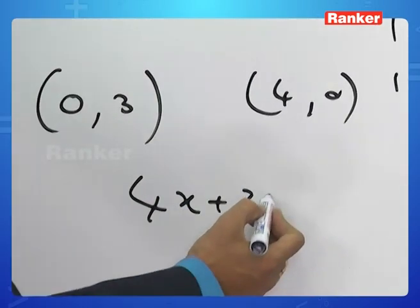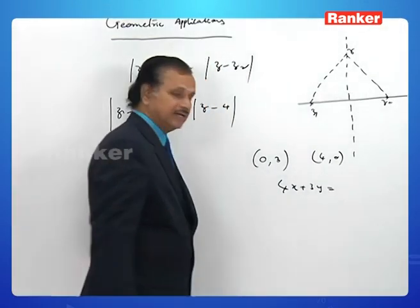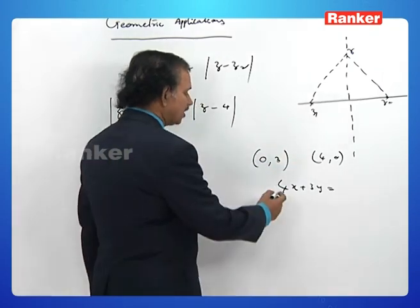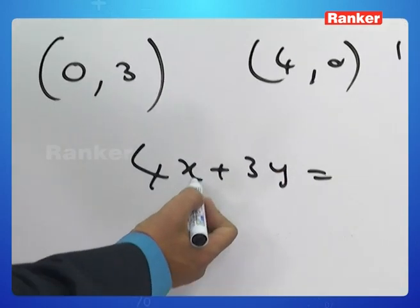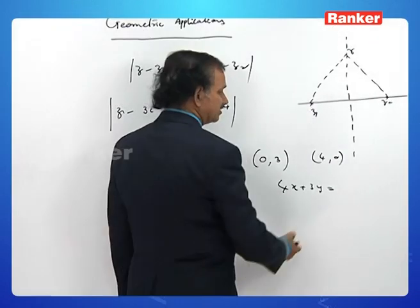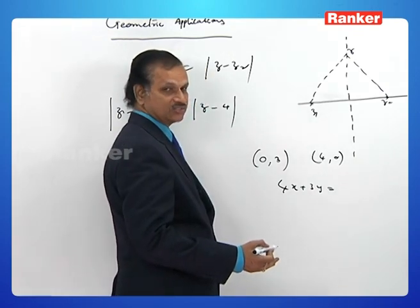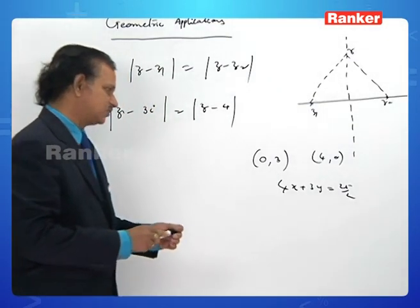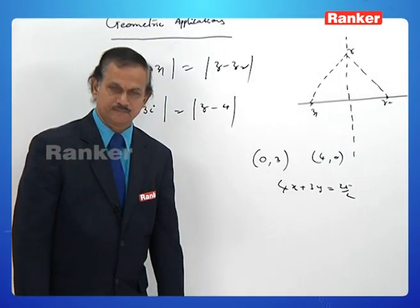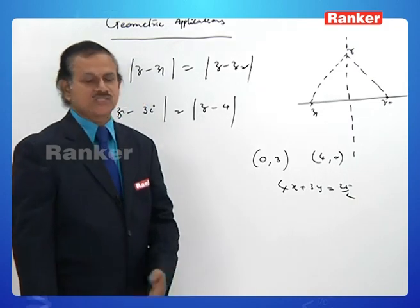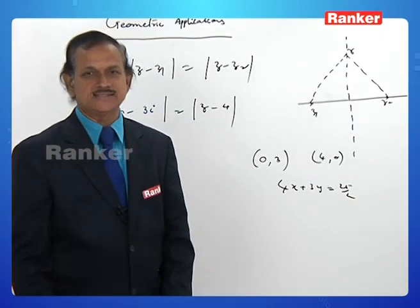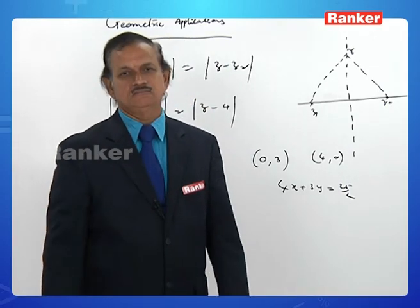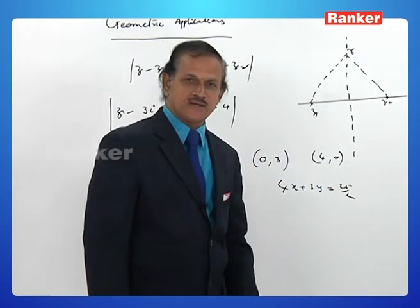With slope 4/3, the perpendicular bisector starts with 4x + 3y = C. Since it is a bisector, it passes through the midpoint of (0, 3) and (4, 0), which is (2, 3/2). Substituting: 4(2) + 3(3/2) = 8 + 9/2 = 25/2. So the equation is 4x + 3y = 25/2.